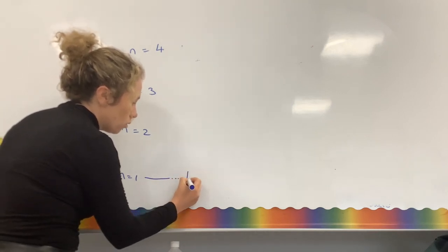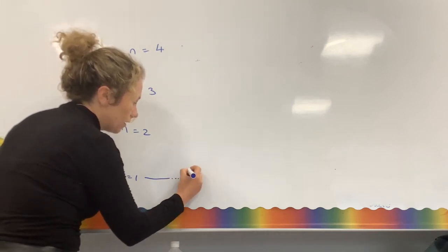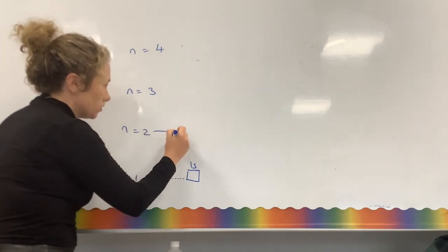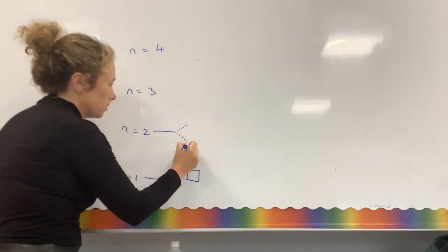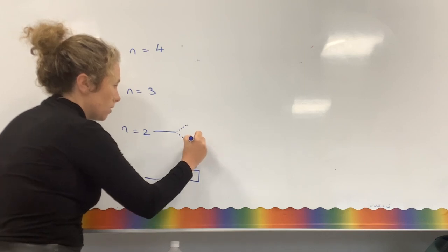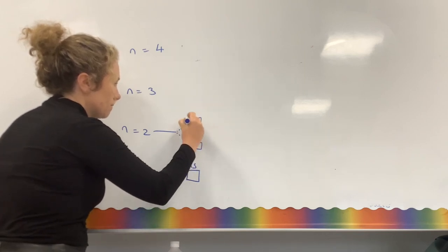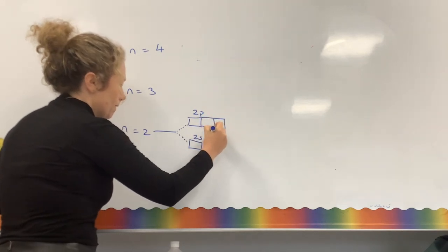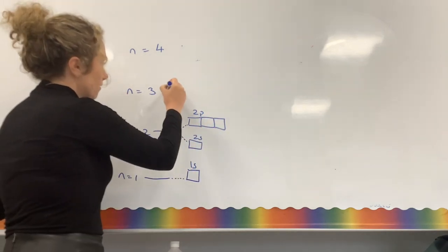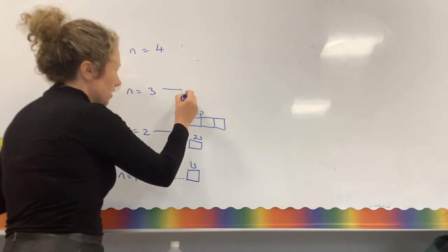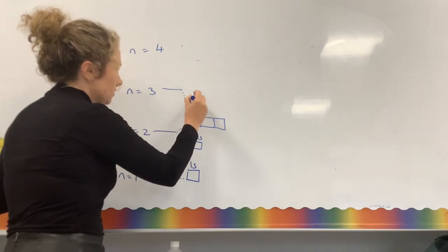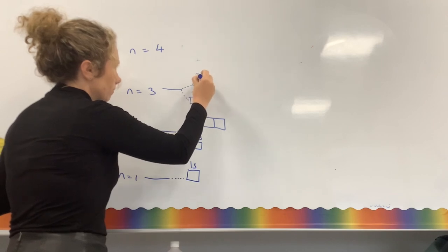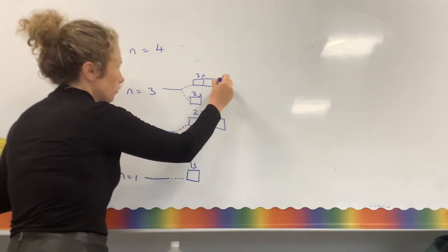Our first energy level is made of one sublevel: 1s. Our second energy level is made of two sublevels: 2s and 2p. Our third energy level is made of three sublevels: 3s, 3p, and 3d.